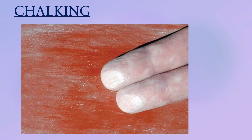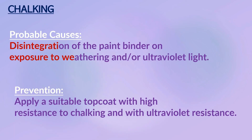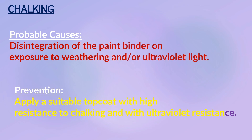Chalking: a powder layer on the surface of a paint film; a change of color or fading is also seen. Chalking rates vary with pigment concentration and choice of binder. Chalking is a known characteristic of certain paints, e.g. epoxy paints. Probable causes: disintegration of the paint binder due to exposure to weathering or ultraviolet light. Prevention: apply a suitable top coat with high resistance to chalking and with ultraviolet resistance.